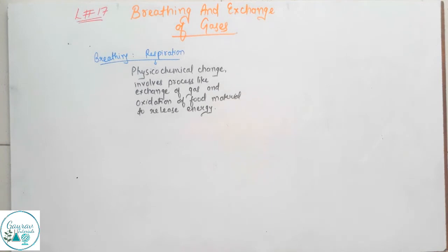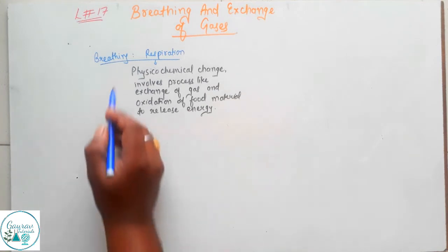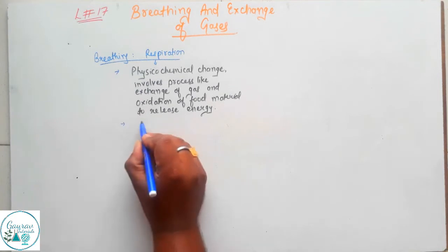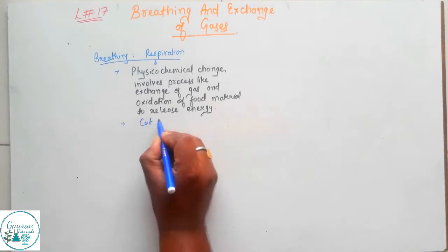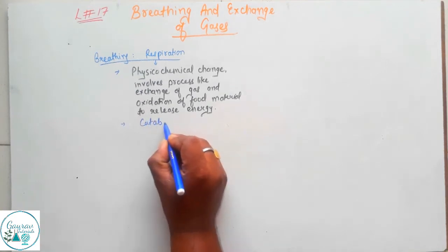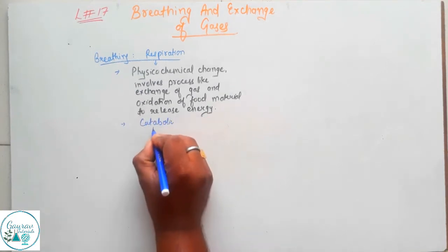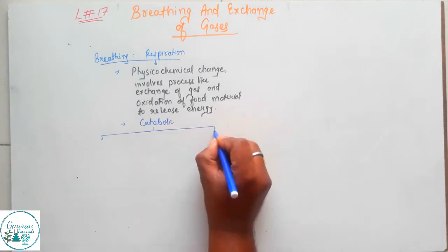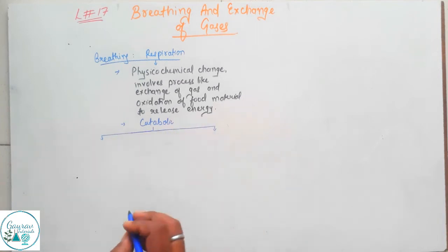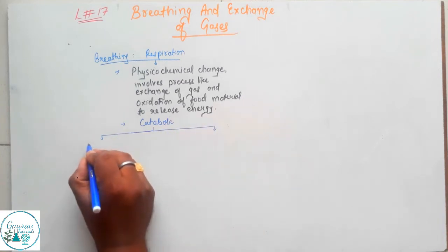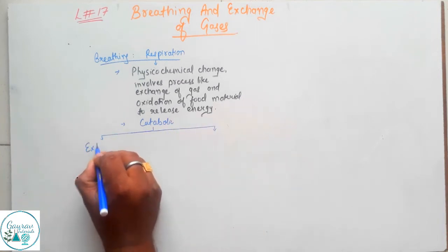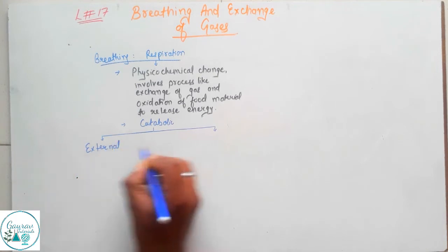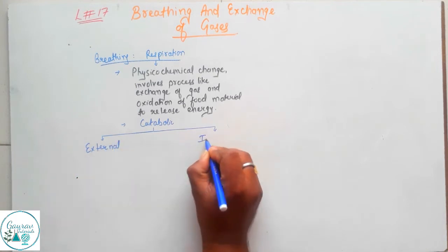Respiration is a catabolic process. It has two parts: one is external and the other one is internal.